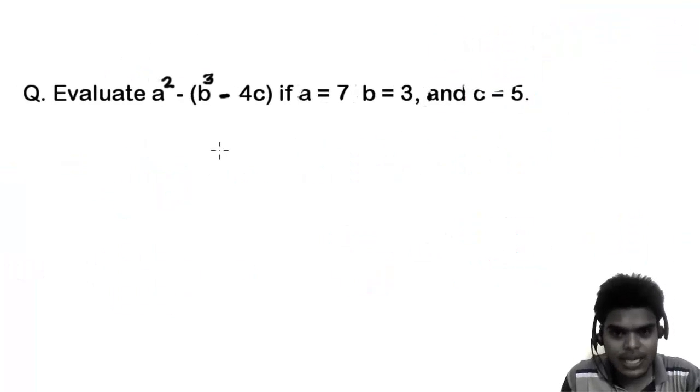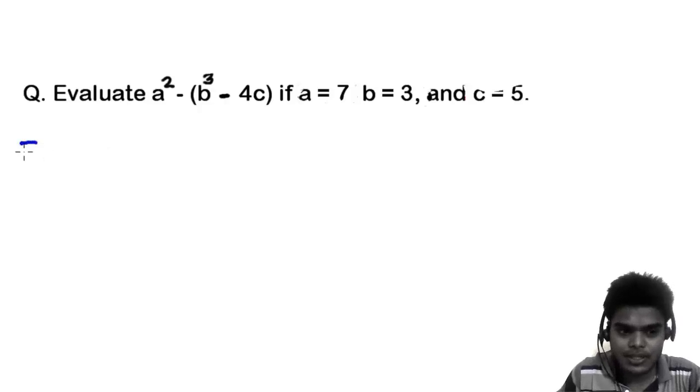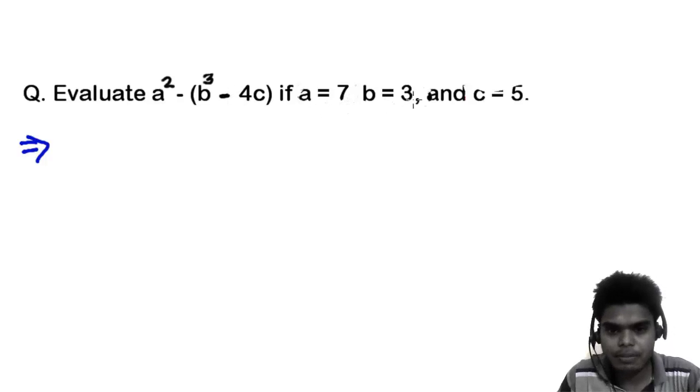Here we have another question based on BODMAS and this will increase your knowledge definitely. So let's do this, first let me read this question. Evaluate a square minus b cube minus 4c if a equals to 7, b equals to 3, and c equals 5.